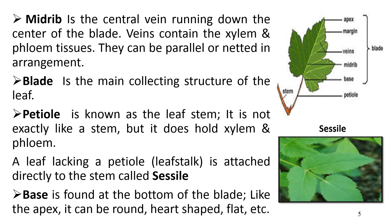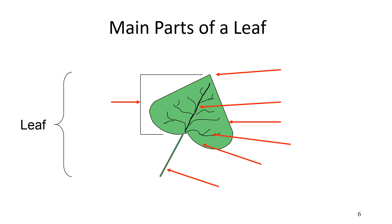The next part of the leaf is the midrib, in which the central vein runs down the center of the blade. The veins contain the xylem and phloem of the plant; they can be parallel in case of monocots and in a netted arrangement in case of dicots. The blade is the main collecting structure of the leaf with a large, broad surface. The next part is the petiole, also known as the leaf stem — it holds the xylem and phloem and keeps the blade away from the stem. Sometimes leaves are missing the petiole and are directly attached to the stem; such a leaf is called sessile. The base is found at the bottom of the blade and can be round, heart-shaped, flat, etc.